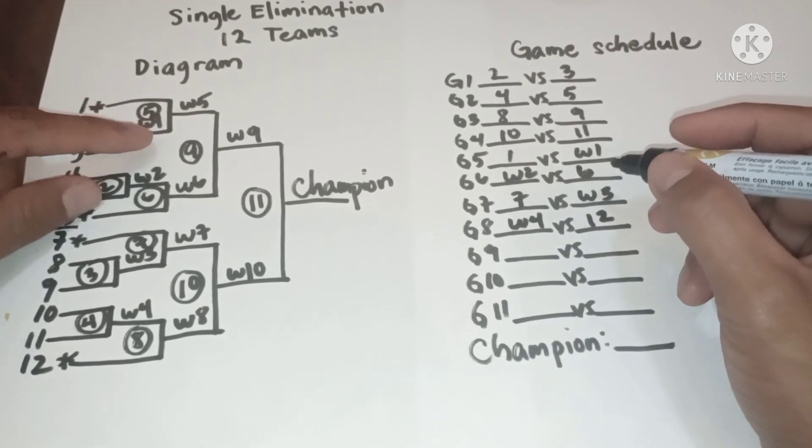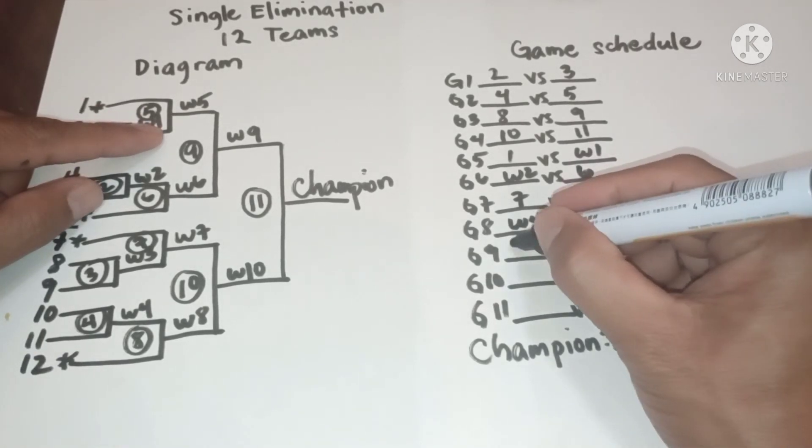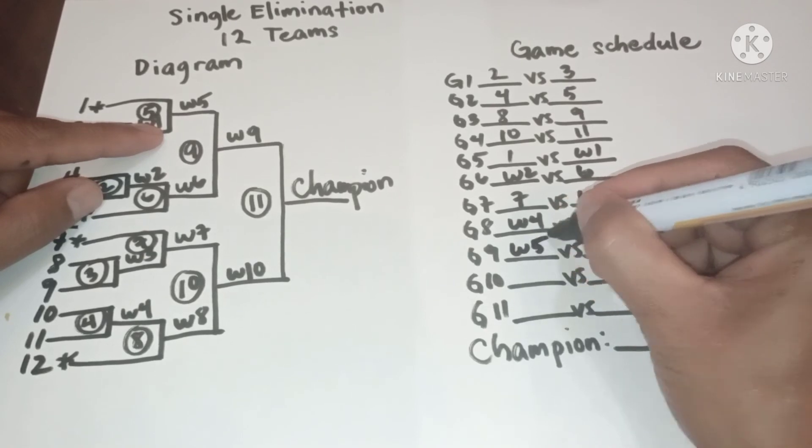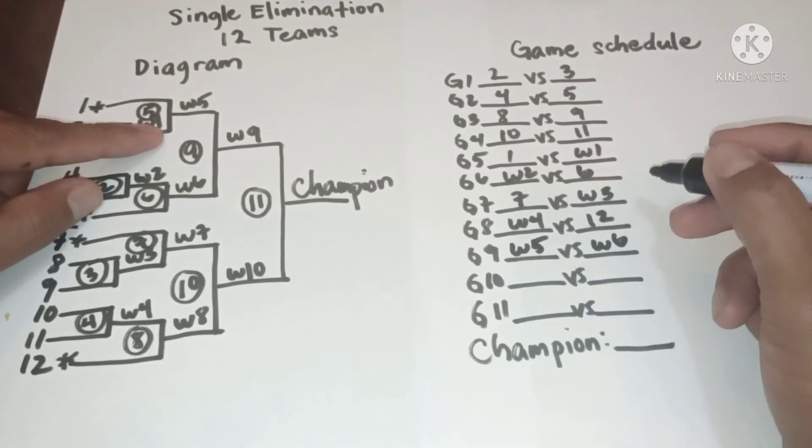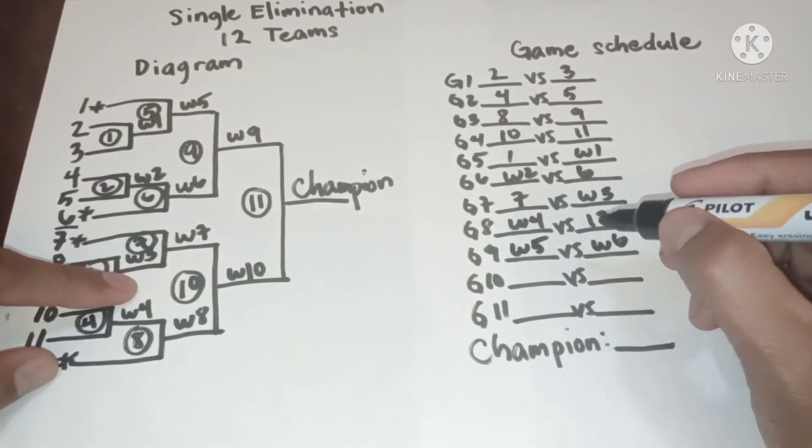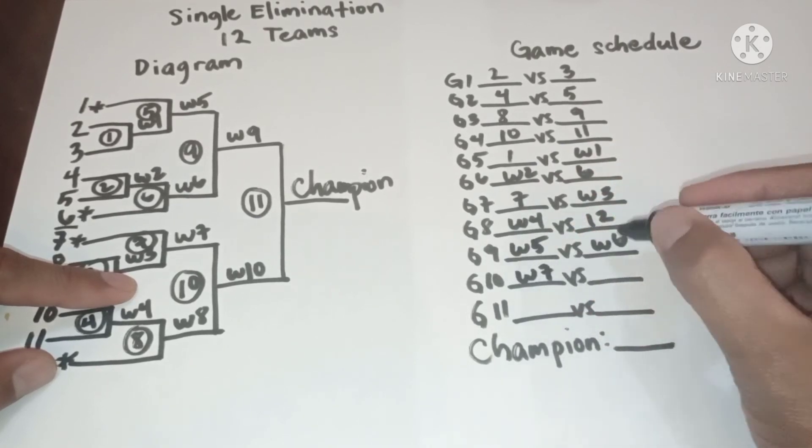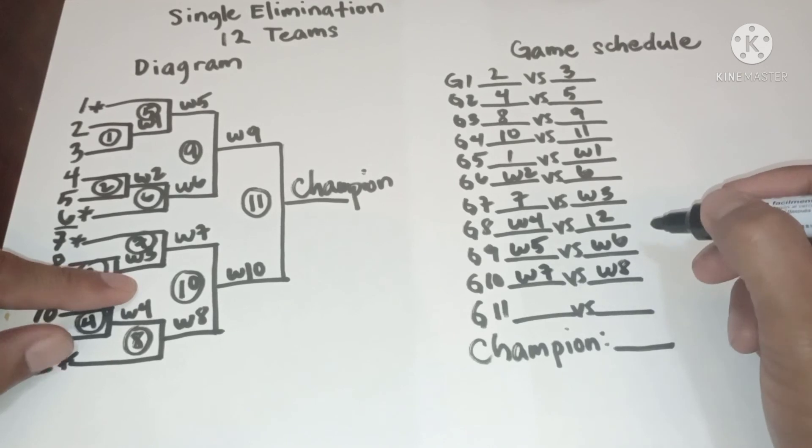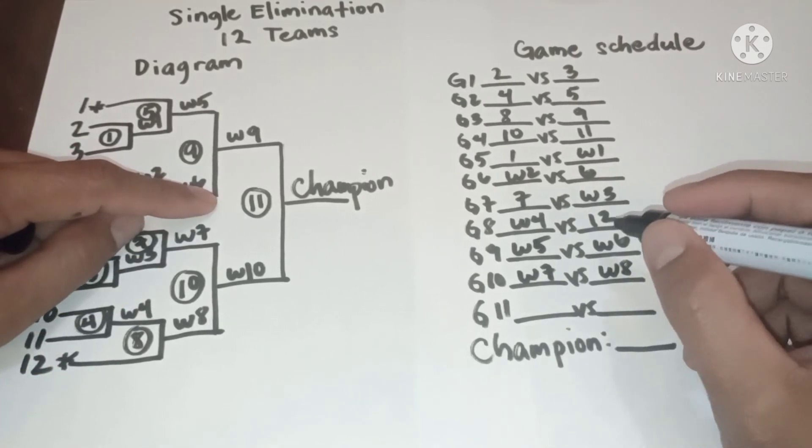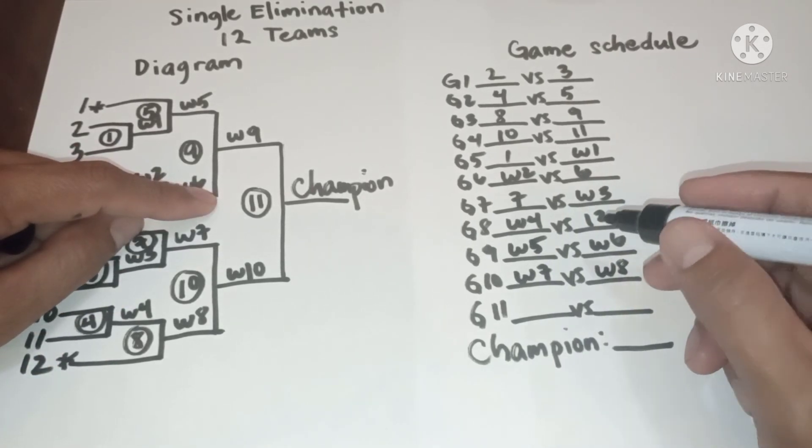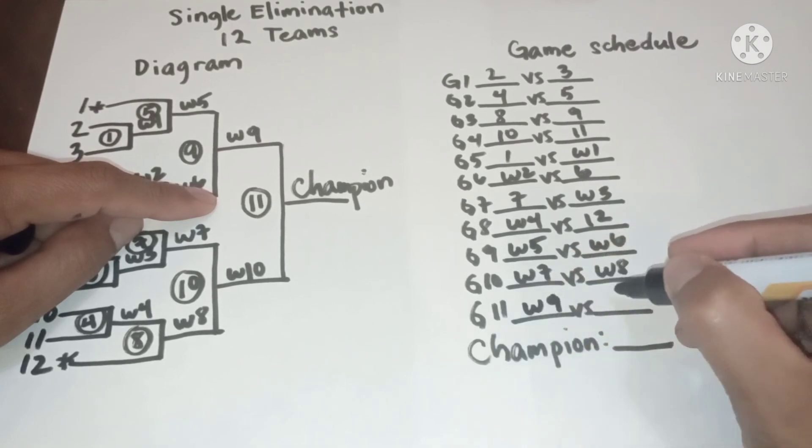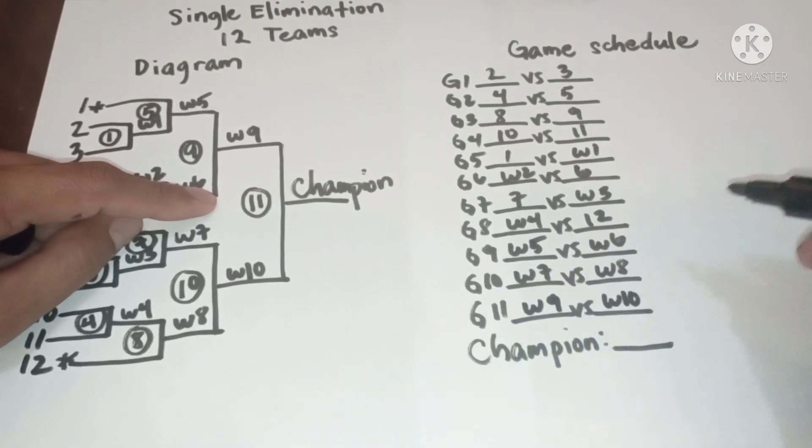In game 9, we have winner 5 versus winner 6. In game 10, we have winner 7 versus winner 8. In game 11, we have winner 9 versus winner 10.